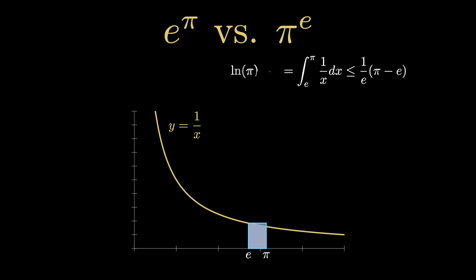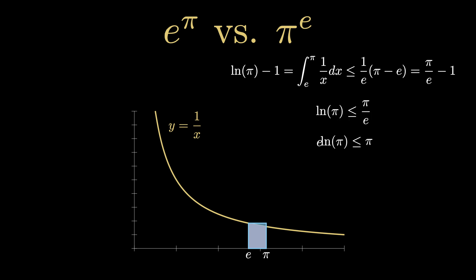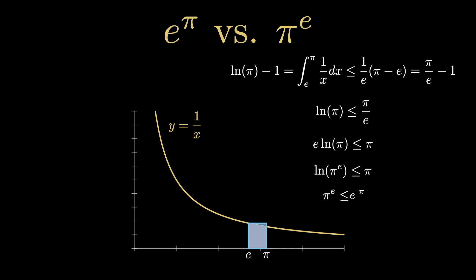Notice that the definite integral is the natural log of pi minus 1, and the area of the rectangle can be simplified to pi over e minus 1. This implies that the natural log of pi is less than or equal to pi over e. Multiplying both sides by e shows us that e times the natural log of pi is less than or equal to pi, and applying natural log rules twice eventually leads us to the fact that pi to the e is less than or equal to e to the pi.